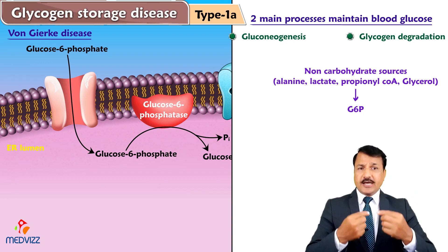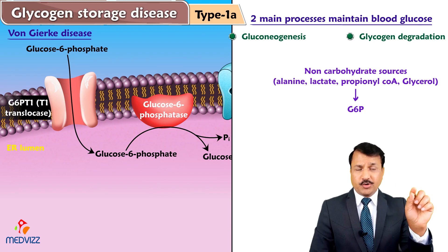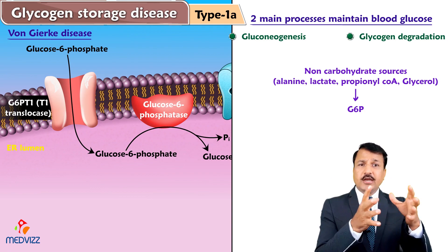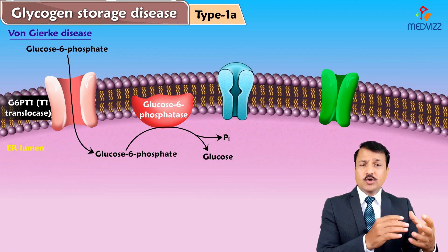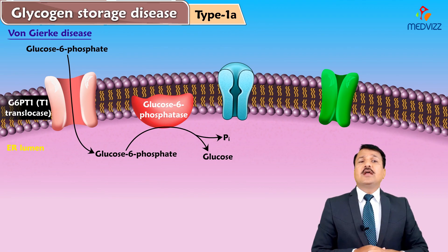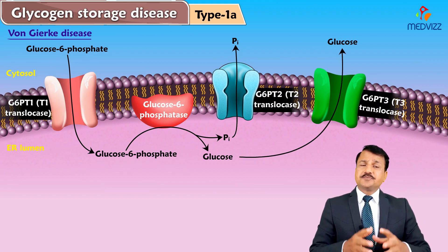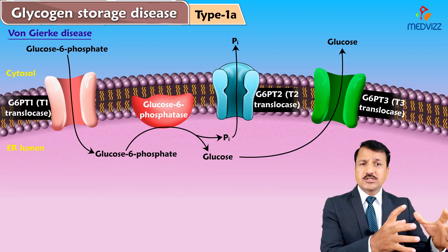Glucose-6-phosphate has to enter the lumen of the endoplasmic reticulum via T1-translocase protein. Once T1-translocase allows glucose-6-phosphate into the ER, glucose-6-phosphatase enzyme converts it into glucose and inorganic phosphate. The inorganic phosphate exits the ER into the cytoplasm via T2-translocase protein, and the glucose exits into the cytoplasm via T3-translocase protein. So we need glucose-6-phosphatase, T1-translocase, T2-translocase, and T3-translocase proteins.